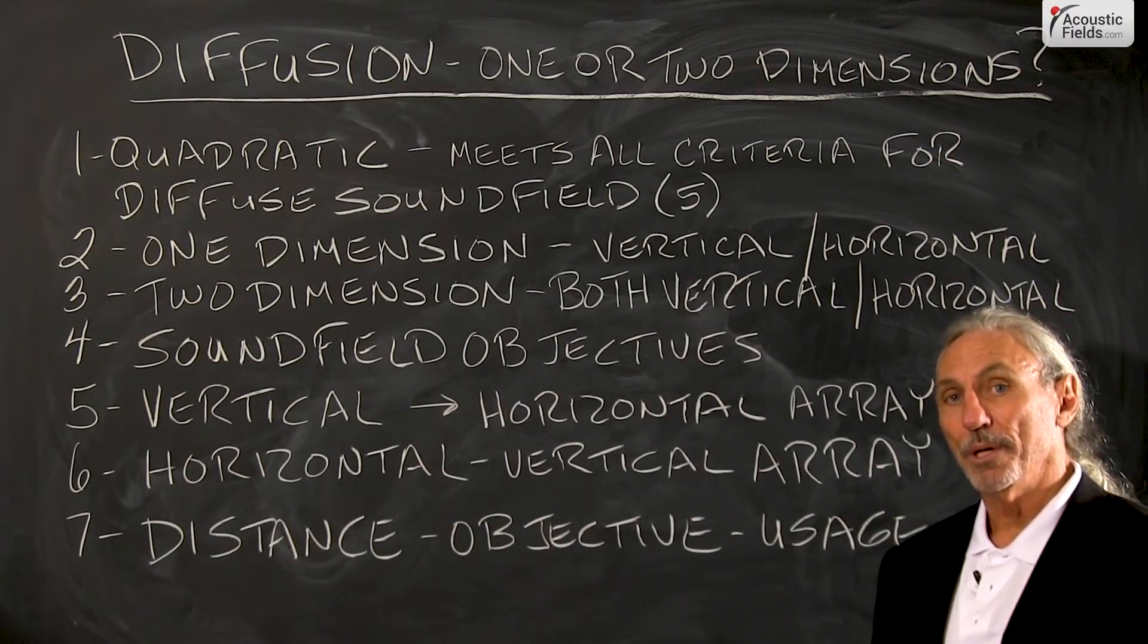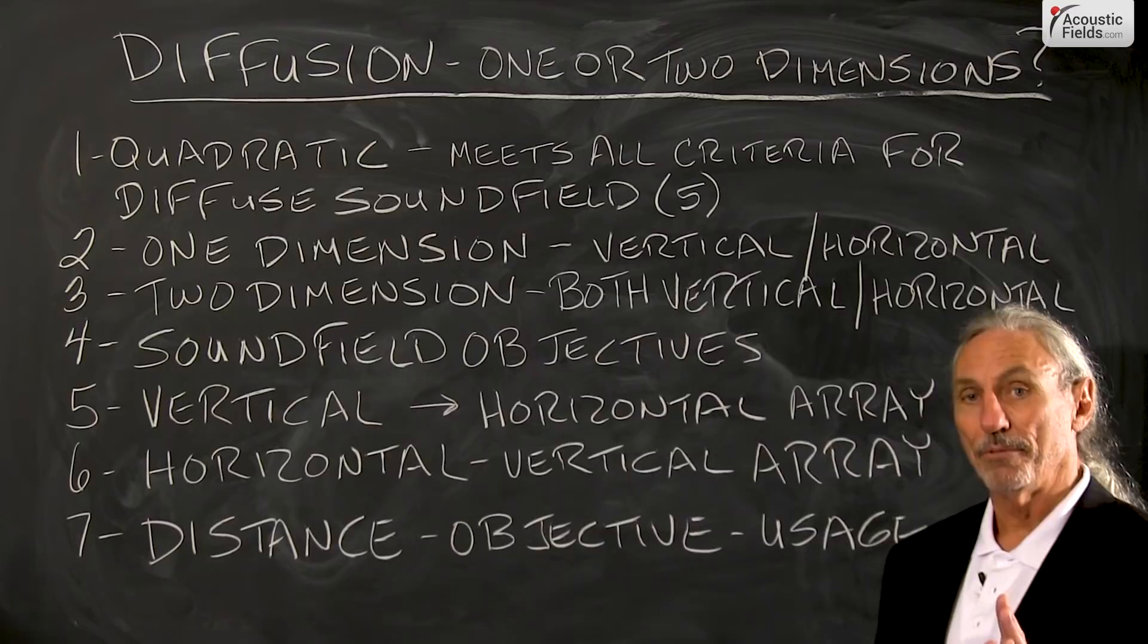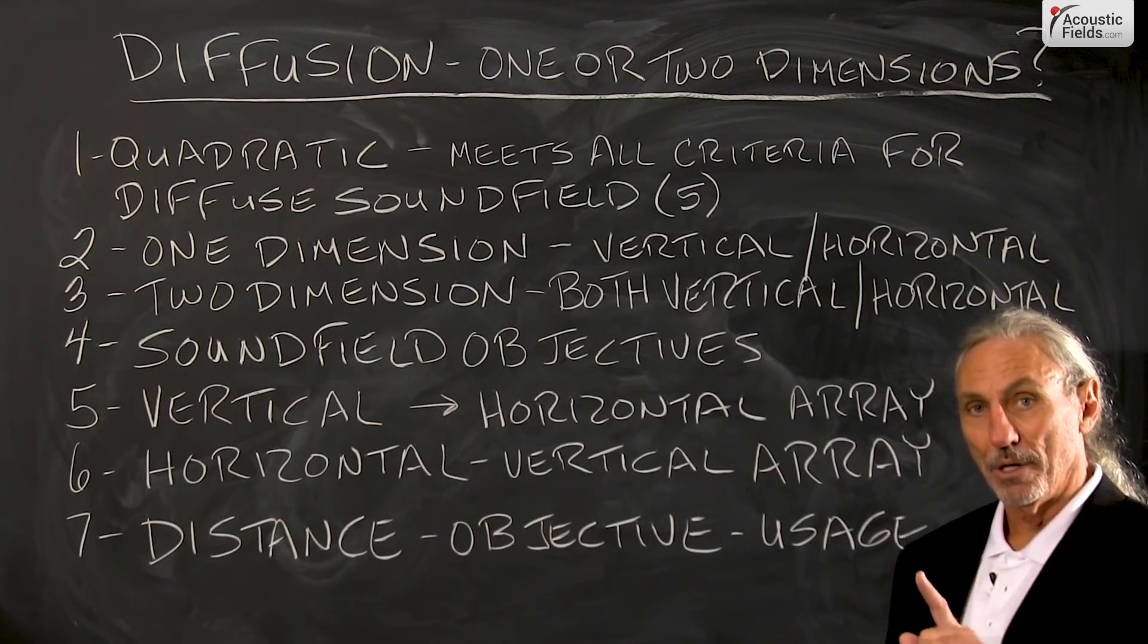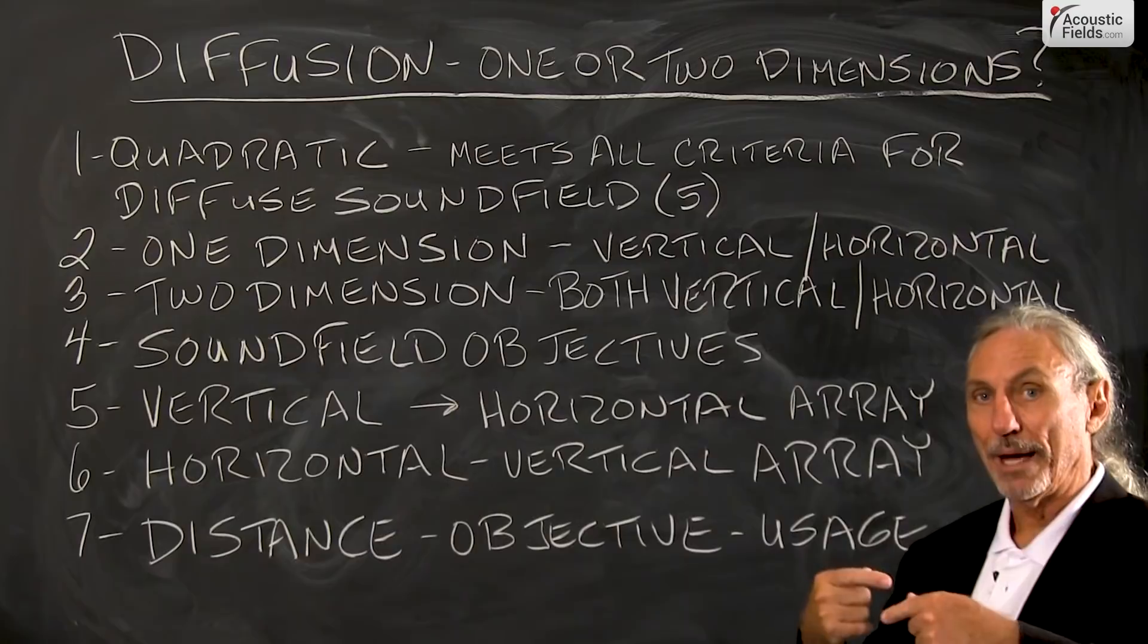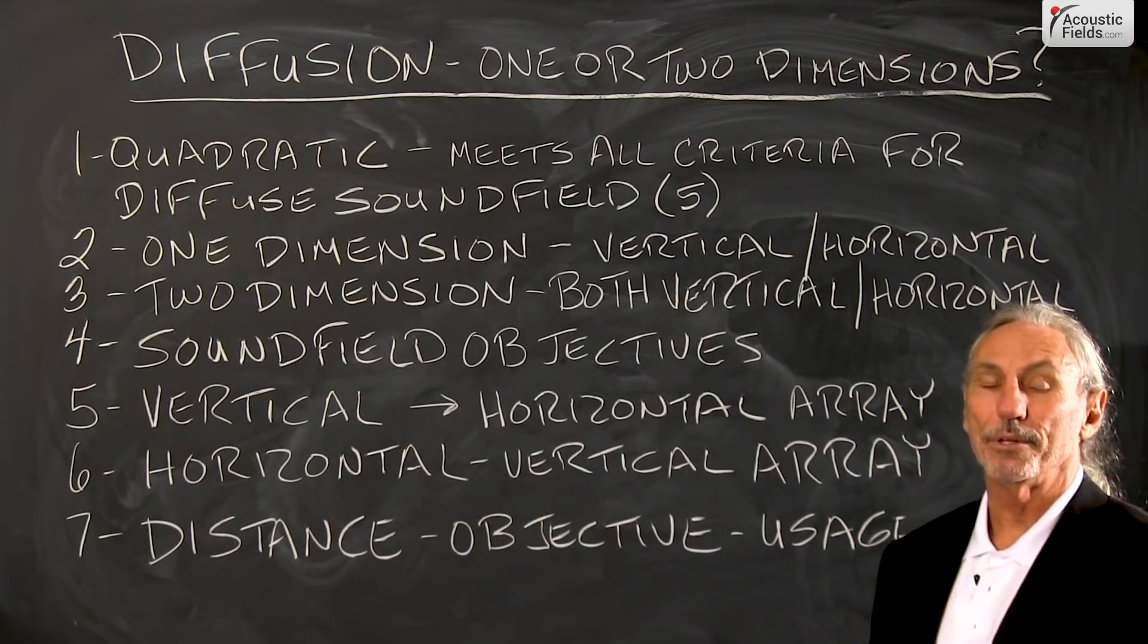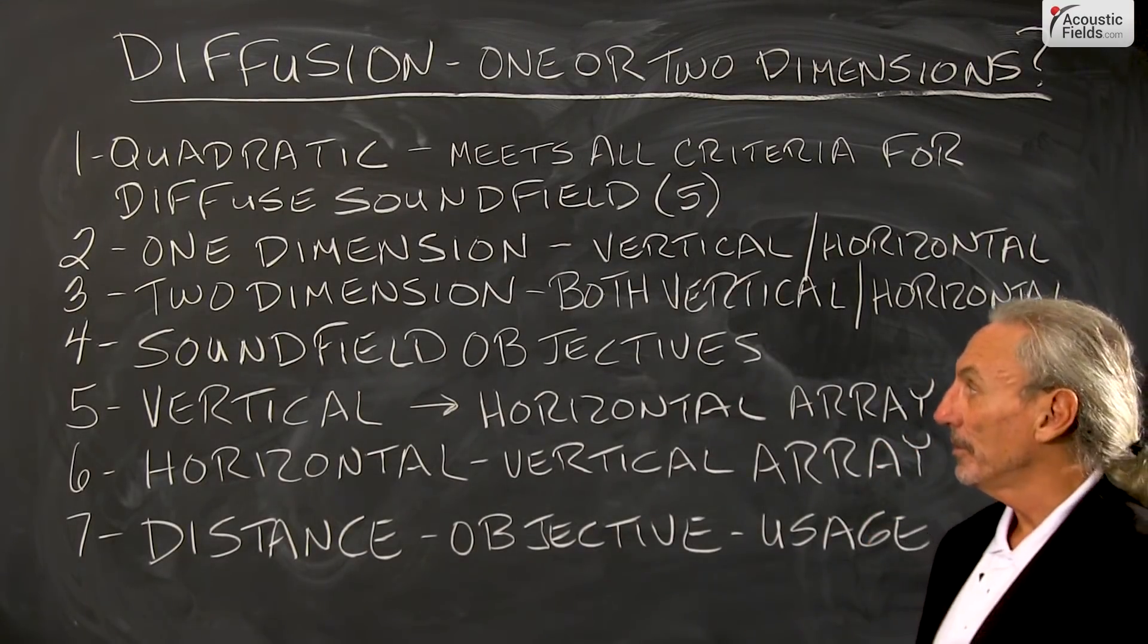Now in a room we know we have three real major sound fields. We have the horizontal, we have the vertical, and then we have front to back. So we really have three sound fields in a room that we must be conscious of.